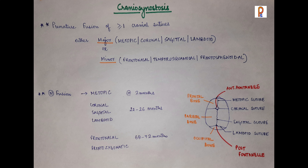We have major sutures and minor sutures. The major sutures involve the metopic suture, coronal, sagittal, and lambdoid. While the minor sutures involve the frontonasal, temporosquamosal, frontosphenoidal, and frontozygomatic. So craniosynostosis is defined as a premature fusion of one or more cranial sutures which may involve either major, minor, or all the sutures.